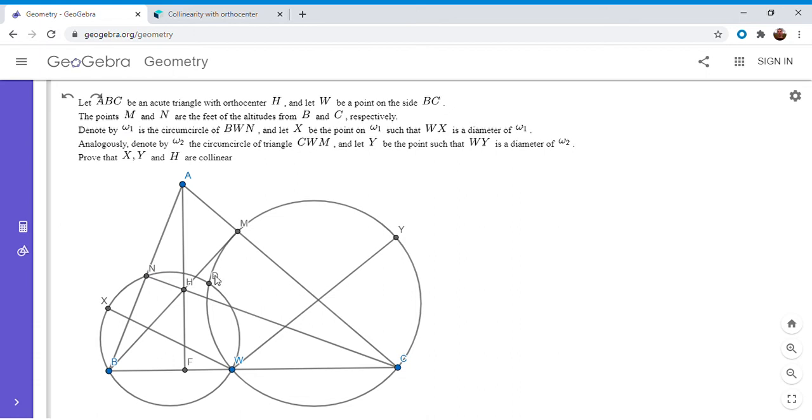I'm going to calculate angle NDM and show it's 180 minus angle A. So angle NDM - well, angles NDW and MDW have to add with NDM to make 360. So NDM is 360 minus NDW minus MDW. But NDW is one of the angles in the cyclic quadrilateral NDWB, so NDW is 180 minus NBW. We can make the same substitution: MDW is 180 minus MCW.